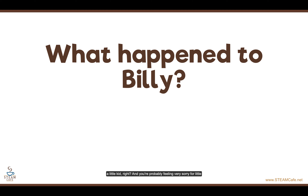You're probably feeling very sorry for little four-year-old Billy who was orphaned. Here's where context matters. Billy is a kid, but there are two meanings for 'kid' — it means a young human, or it could mean a young goat. Billy is a goat. And the reason he couldn't arrive at his new home is because he ate the tag that had all his information. Do you see what I mean by context completely changing the meaning of the story? And that context is based on the interpretation of a single word: kid.